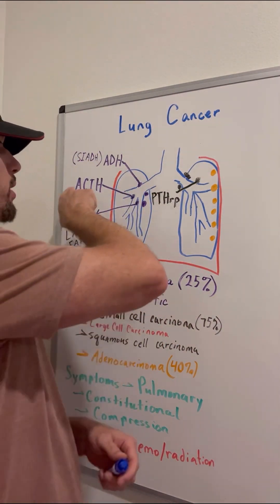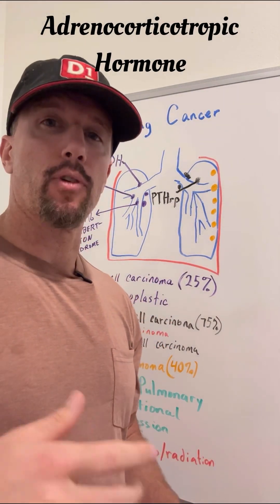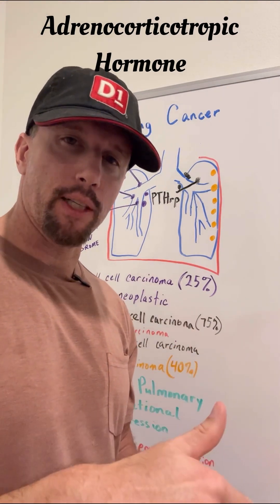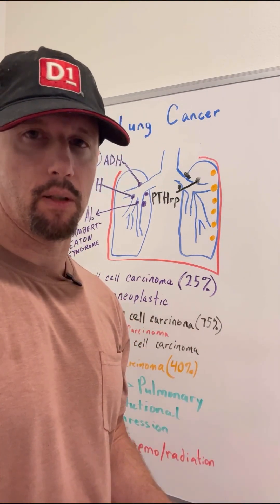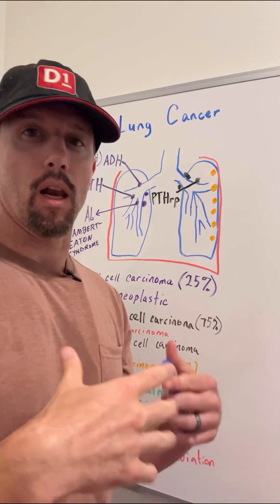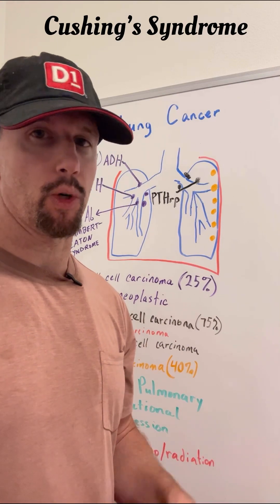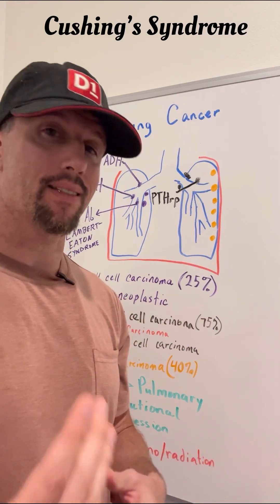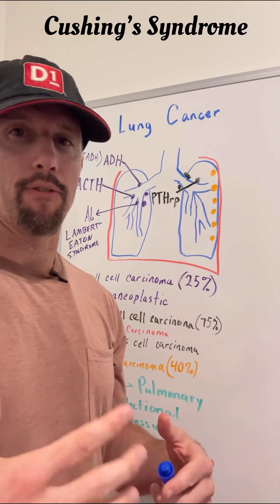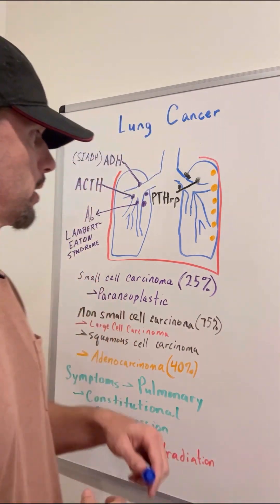Small cell carcinoma can also release adrenocorticotropic hormone. This is typically released from the anterior pituitary gland, and it signals the adrenal gland to secrete cortisol. If you have a lot of this being released, you're going to have a lot more cortisol than you need, and that can lead to Cushing's syndrome, where you can have hyperglycemia, hypertension, and fat redistribution like a Dowager's hump.